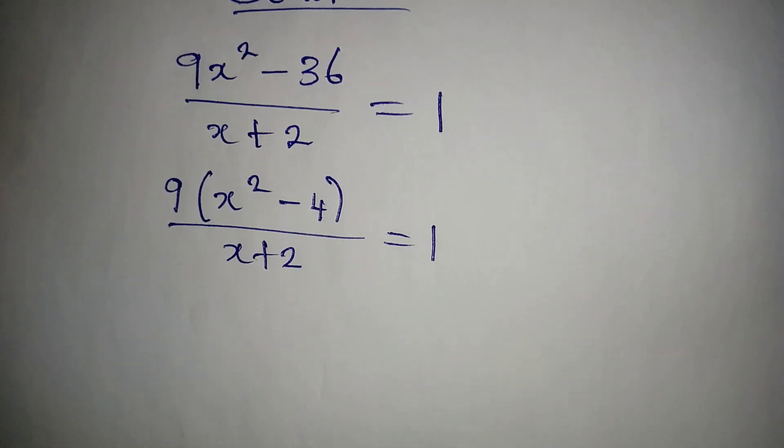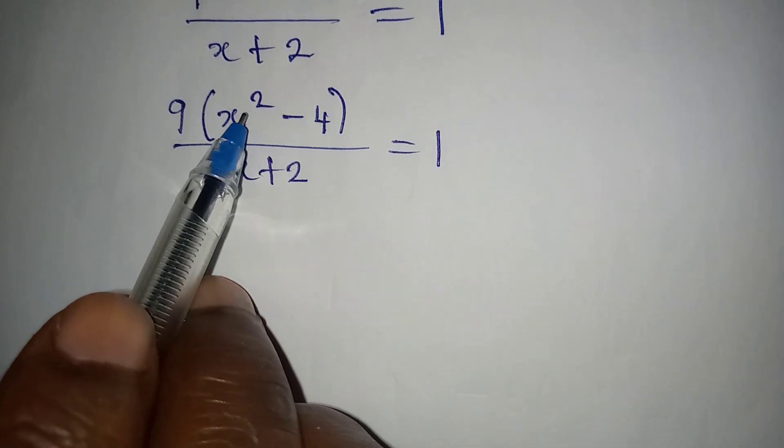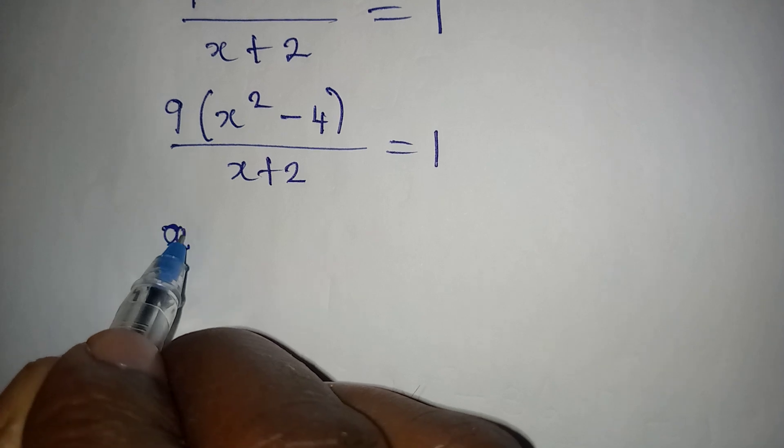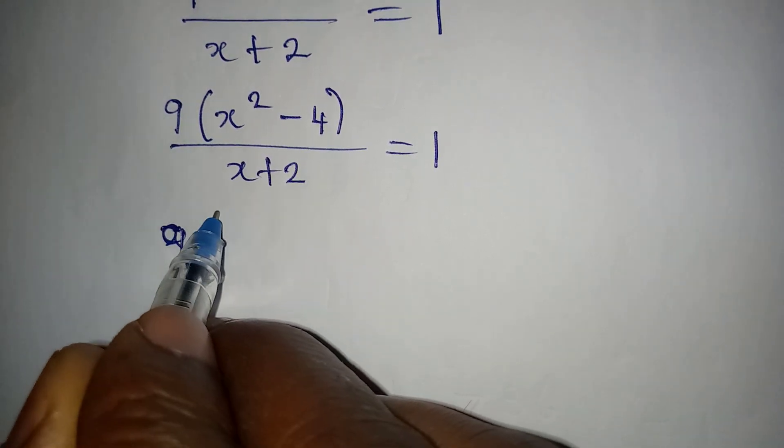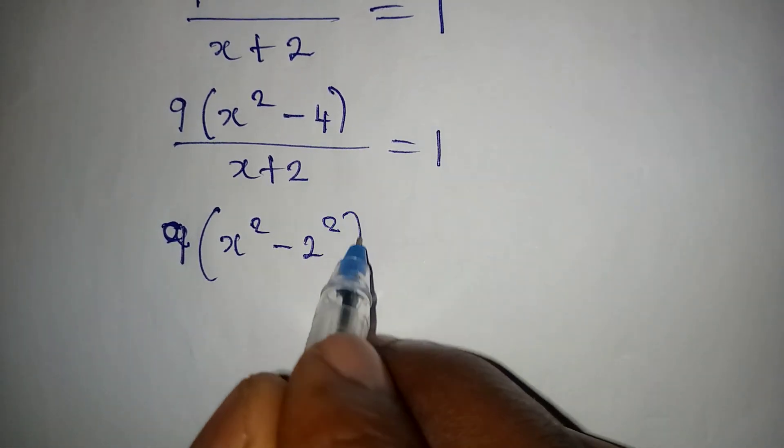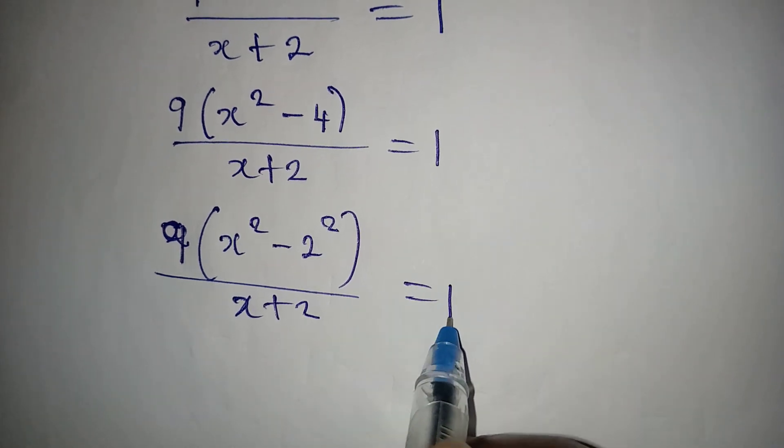Now the next thing I'll do is apply difference of two squares in the numerator. We have 9, then x squared minus 2 squared, because 4 is 2 squared, right? This is over x plus 2 which is equal to 1.